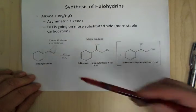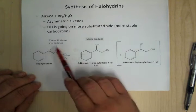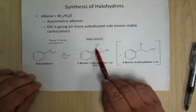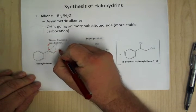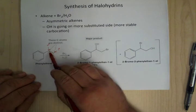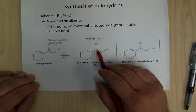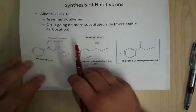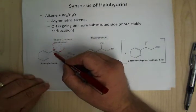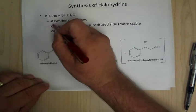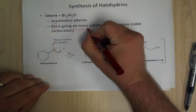For asymmetric alkenes, you're going to follow basically Markovnikov's rules, because you want to make the more stable carbocation. This position is secondary and this one is primary, so we want to put the carbocation here. That's where the water ends up adding — so you want to put the OH on the higher numbered, more substituted side.